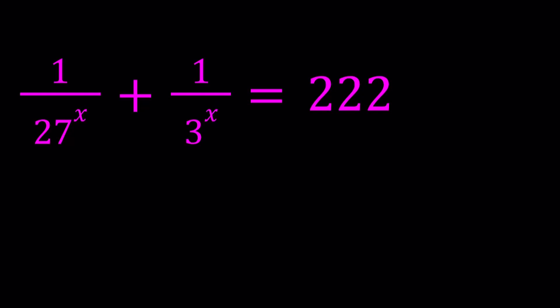Hello, everyone. In this video, we're going to be solving an interesting exponential equation. We have 1 over 27 to the power x plus 1 over 3 to the power x equals 222, and we're going to be solving for all x values. Let's get started.